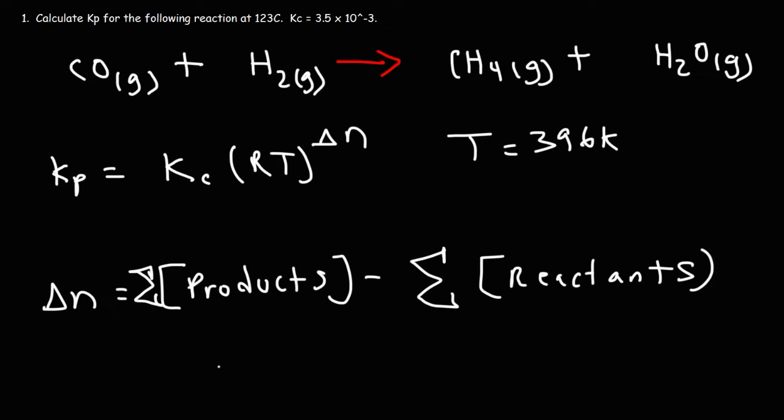In order to calculate delta N, we need to balance the chemical equation first. When balancing a chemical equation, it's best to save the substance in its pure elemental form last. Notice that hydrogen is in its pure elemental form, so I would balance that element last. Note that the number of carbon atoms is the same on both sides. So let's put a 1 in front of carbon monoxide and in front of methane.